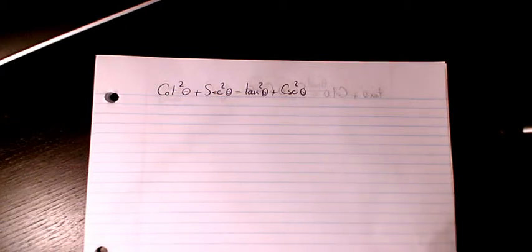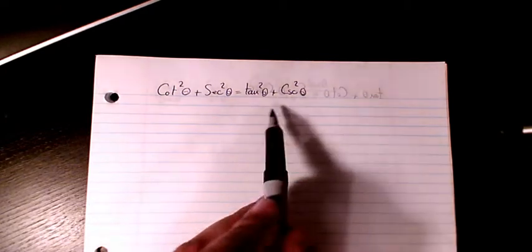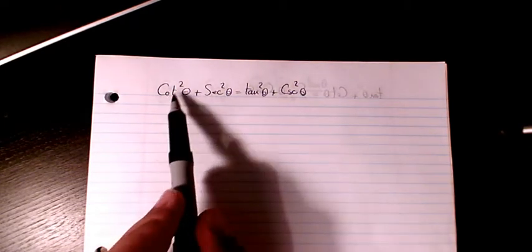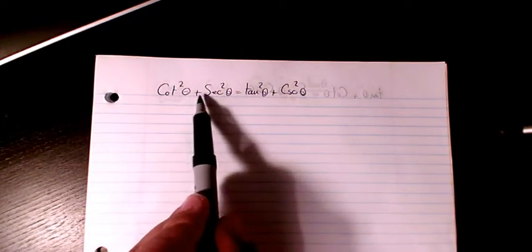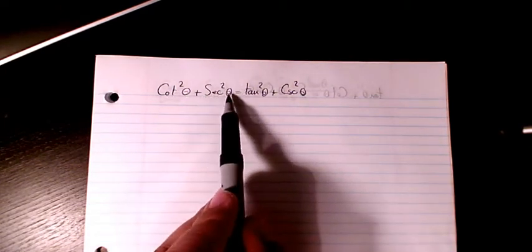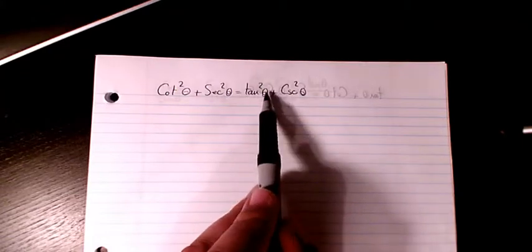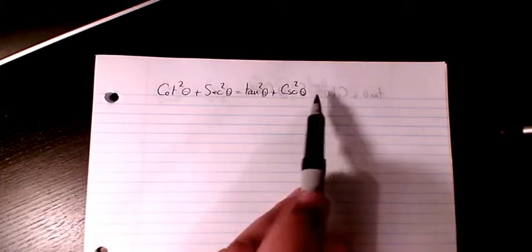What's up guys, this is Massey, welcome to my channel. In this video I want to show you how to prove the trigonometric identity: cotangent squared theta plus secant squared theta equals tangent squared theta plus cosecant squared theta.